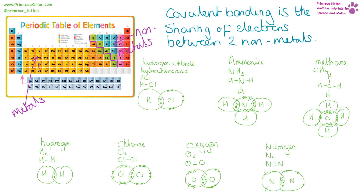Covalent bonding is the sharing of electrons between two non-metals. The common ones you need to know how to draw are: hydrochloric acid (HCl), ammonia (NH3 — nitrogen in the middle, three hydrogens around the side), methane (CH4 — carbon in the middle, four hydrogens), hydrogen (H2), chlorine (halogens go around as diatomic molecules), oxygen (which has a double bond — each line equals a pair of electrons, so two lines means four electrons shared), and nitrogen (which has a triple bond — six electrons being shared in the middle).